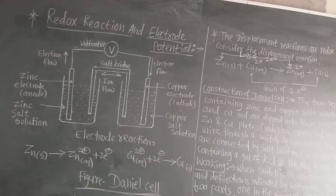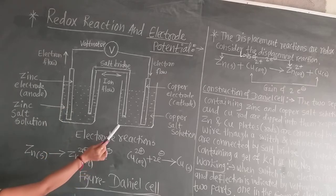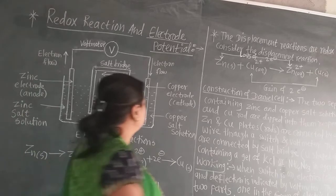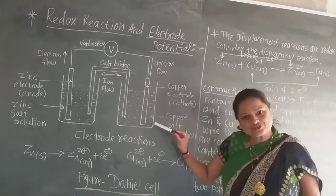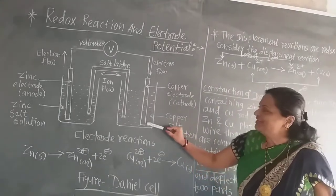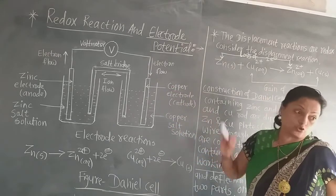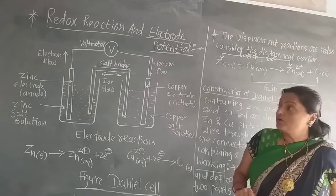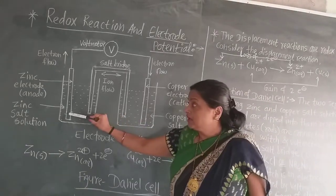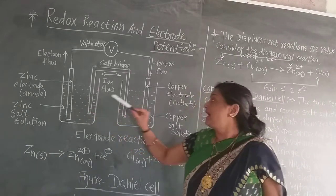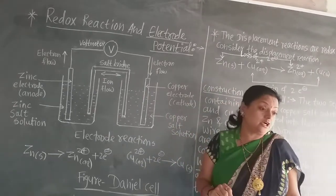Zinc salt means zinc sulphate solution, and the zinc rod is dipped into it. In the other container there is copper sulphate solution — the copper salt solution — and into that the copper rod is dipped. That is the copper electrode, which is the cathode. The zinc acts as the anode and the copper acts as the cathode.